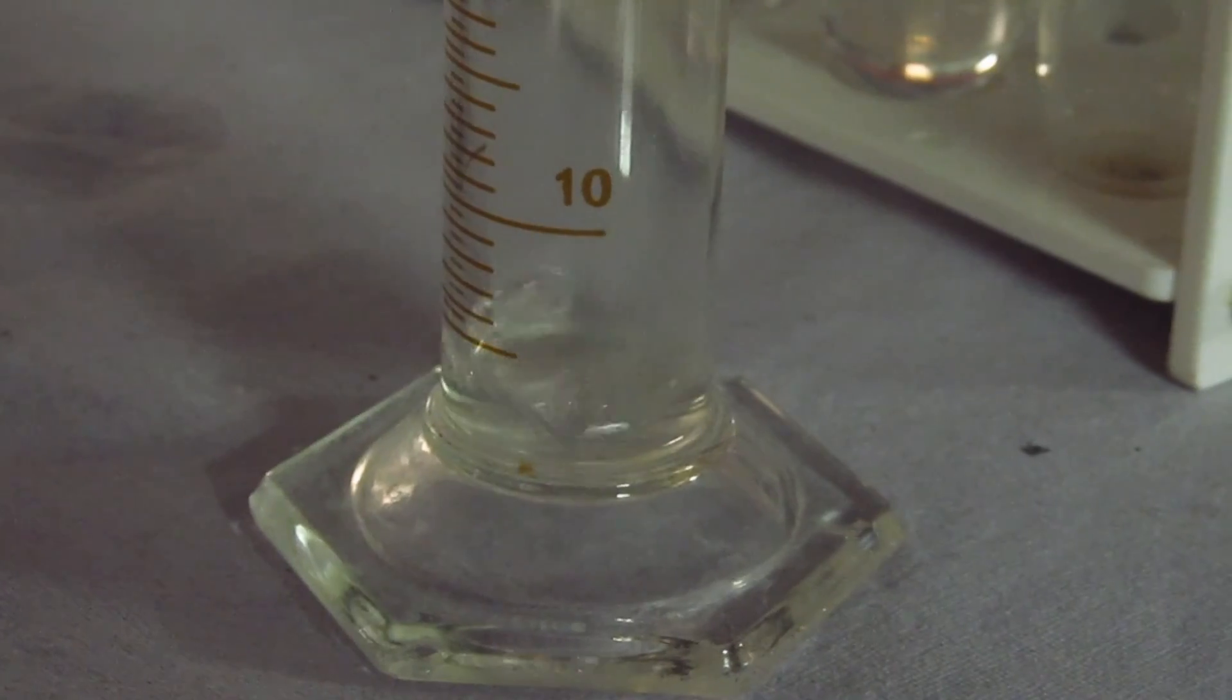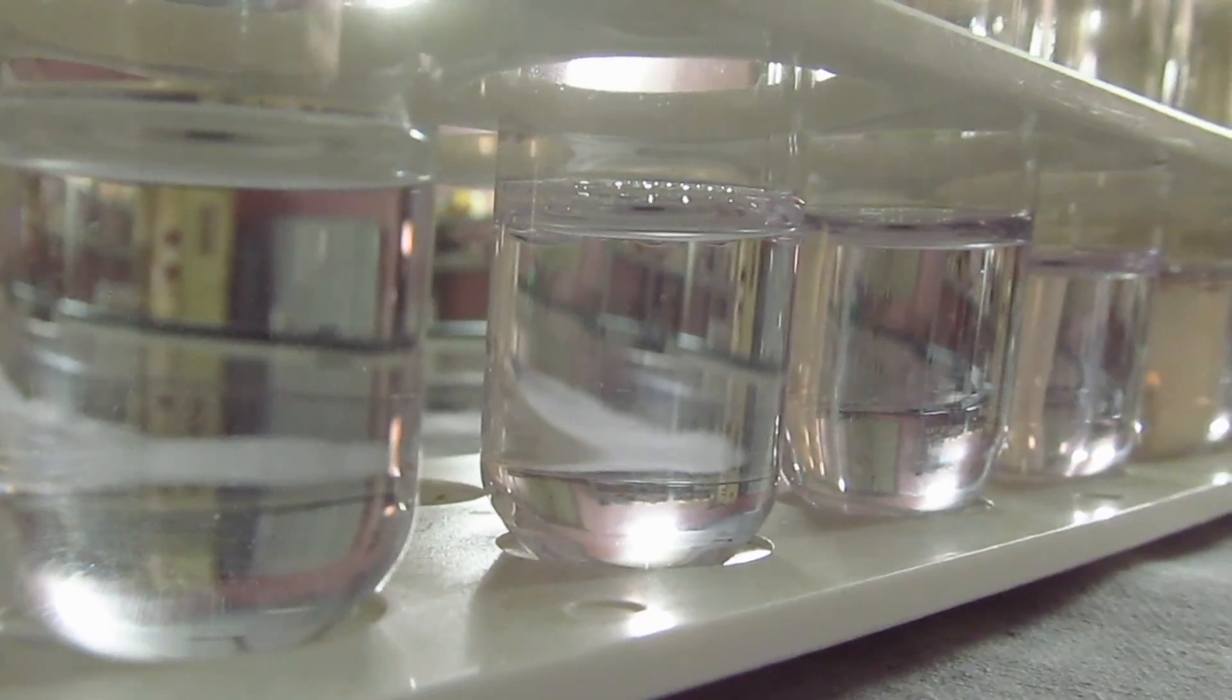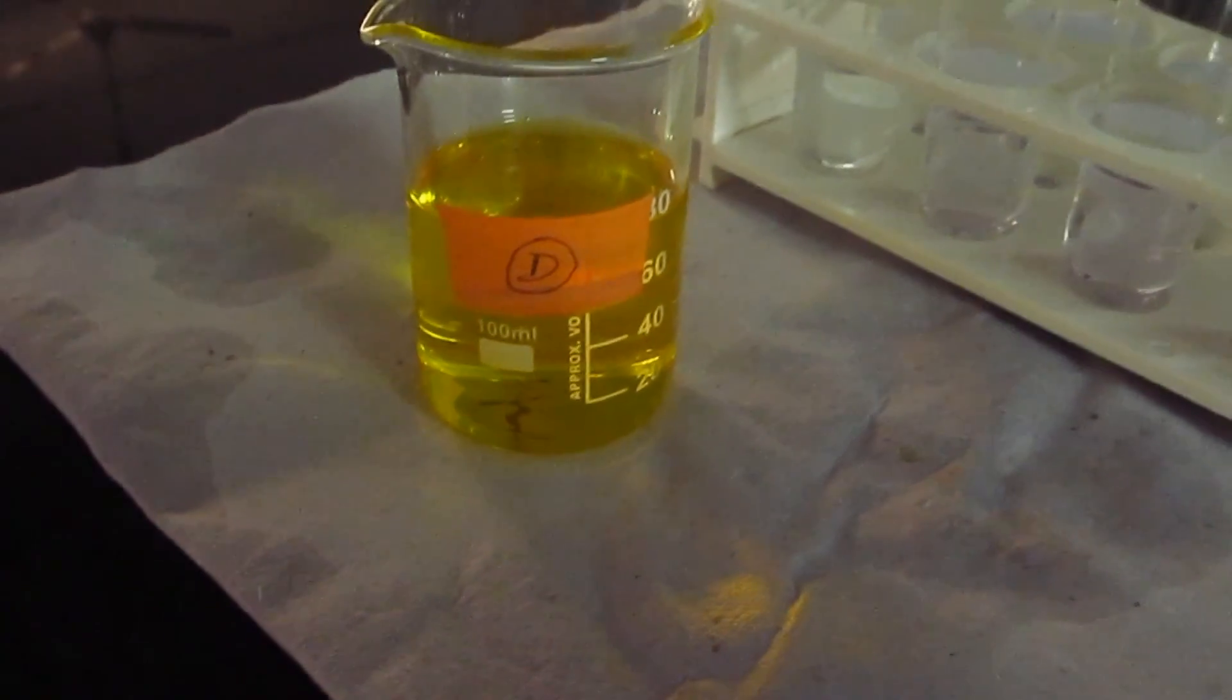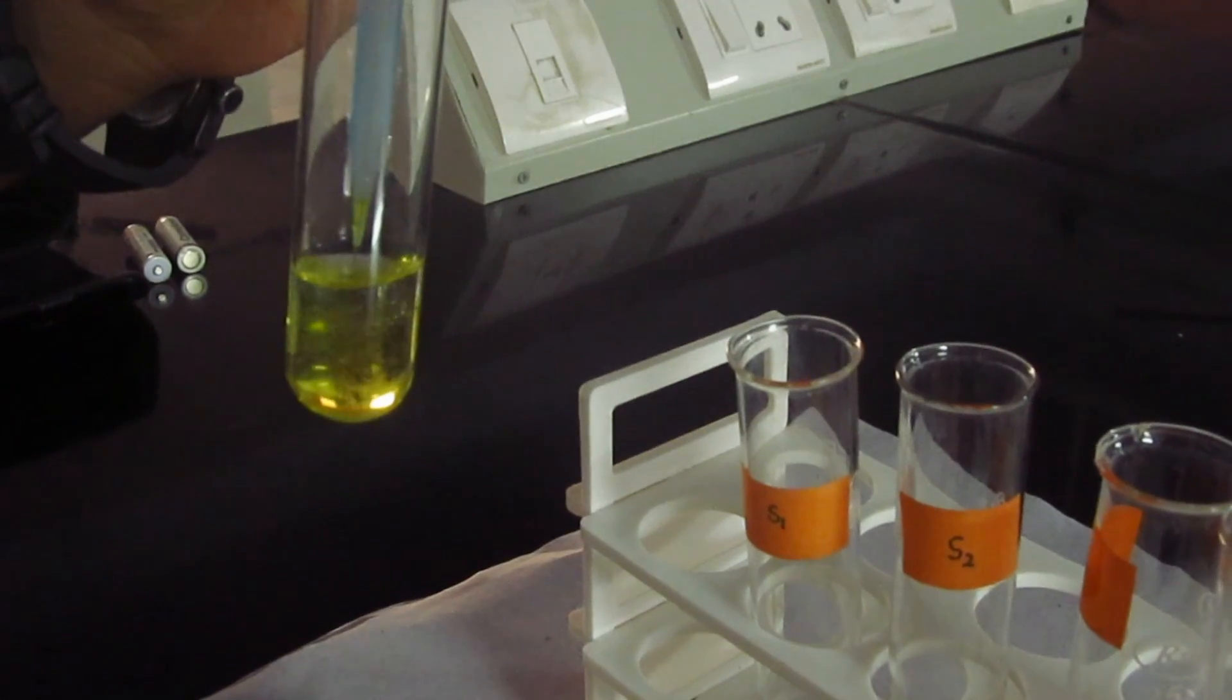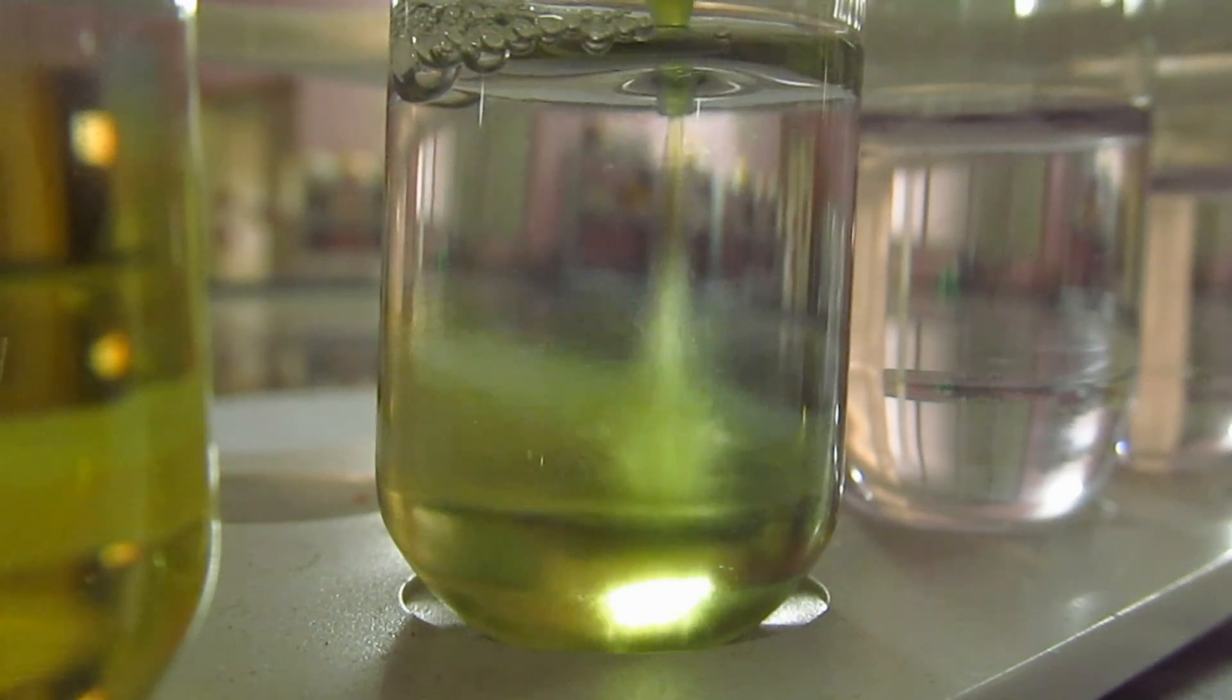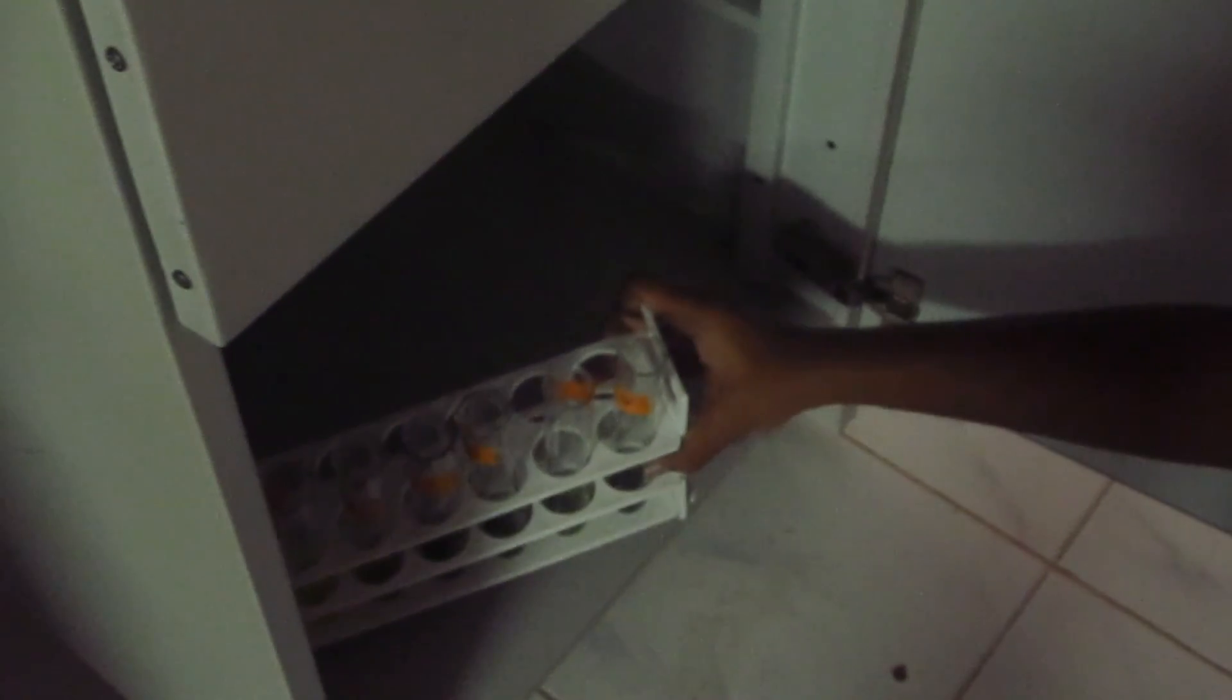Add 5ml of reagent C to all test tubes. After adding reagent C, allow the tubes to stand for 10 minutes. After 10 minutes, add 0.5ml of reagent D to each tube and mix well. After adding reagent D, incubate the tubes in dark for 30 minutes.